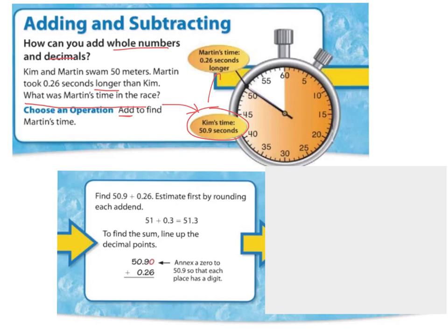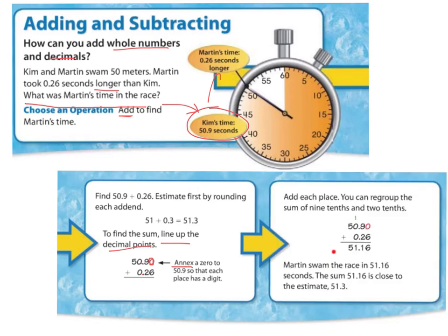So let's look how they line up the decimals. When you add decimals, you line them up. I see a decimal point here and a decimal point here. They are directly above each other. It says annex a zero to 50.9 so that each place has a digit. Well, I notice annex must mean make one or put one there, because nothing's there. So we want a placeholder. And now we're going to add. So then when you add, you add straight down. We know that we get 51 and 16 hundredths. Martin swam the race in 51.16 seconds. The sum is close to the estimate 51.3. I agree they are close. So that means that I must have done the addition right because I estimated first to make sure my answer would be correct.